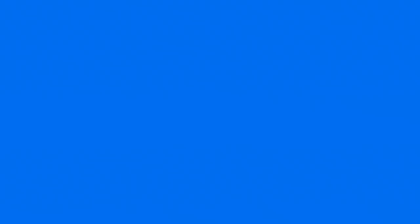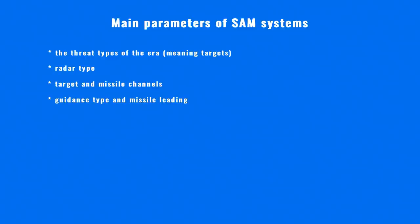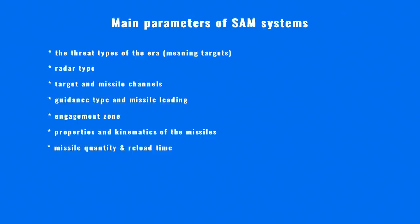These are the cornerstones of the antenna and radar design, but there are many other factors. For understanding the capabilities of SAM systems, the following factors will be presented and explained: the threat types of the era, radar type, target and missile channels, guidance type and missile leading, engagement zone, properties and kinematics of the missiles, missile quantity and reload time, relocation capability, and operational and maintenance issues.